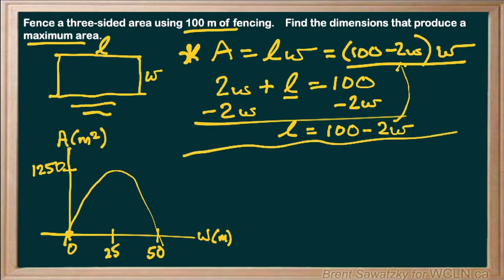And what we can do at this point is we can say we're looking for the dimensions that produce a maximum area. So the vertex, as is often the case, is a point of interest for us. So vertex, and in this case we can say the vertex is 25 and 1250.